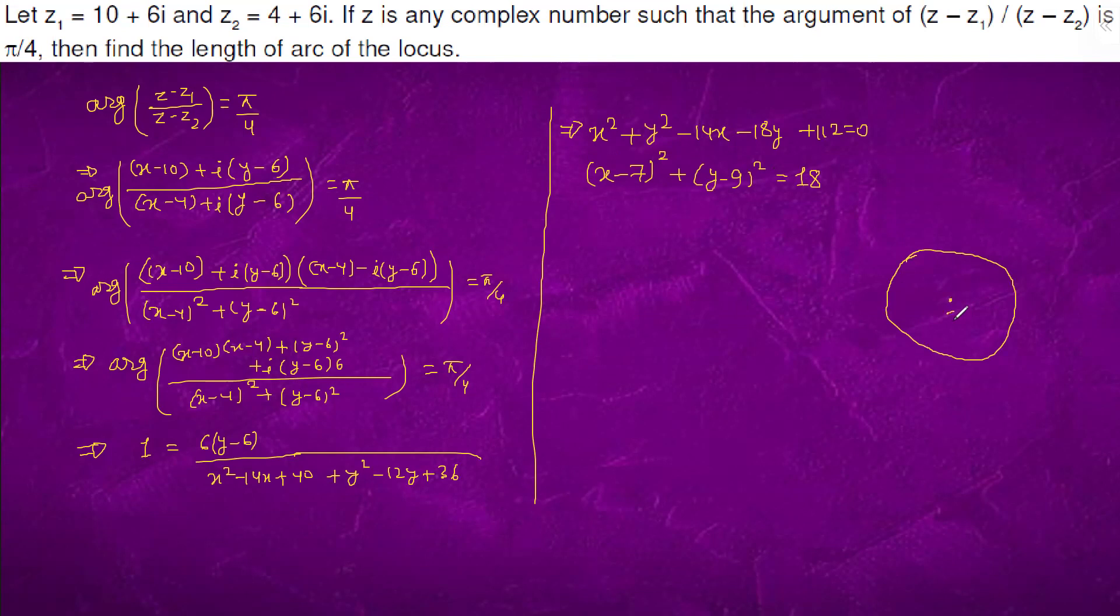This is a circle with center at (7, 9) and with the points on it as (10, 6) and (4, 6).